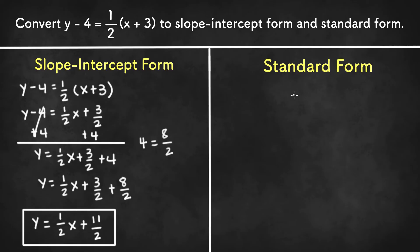Now if we try to convert point-slope form into standard form, we can do it in two ways. We can use the equation in slope-intercept form and convert it to standard form like we did in our previous video, or we can start back at point-slope form. So if we start back at point-slope form, we have y minus 4 equals 1/2(x plus 3).